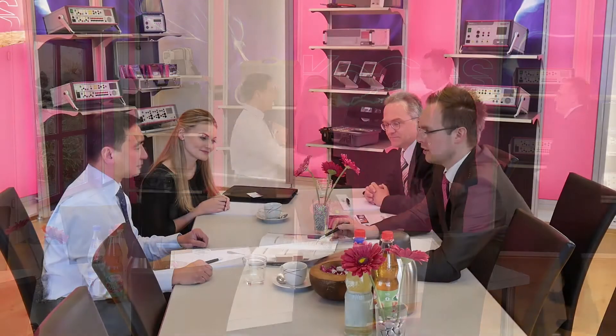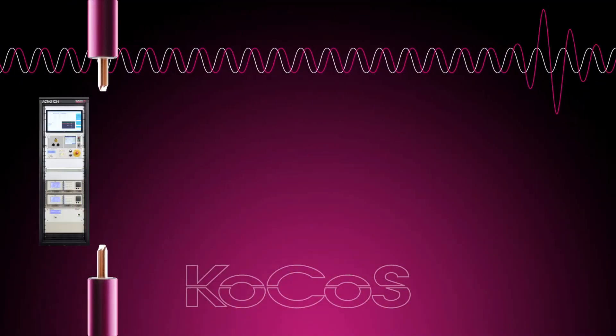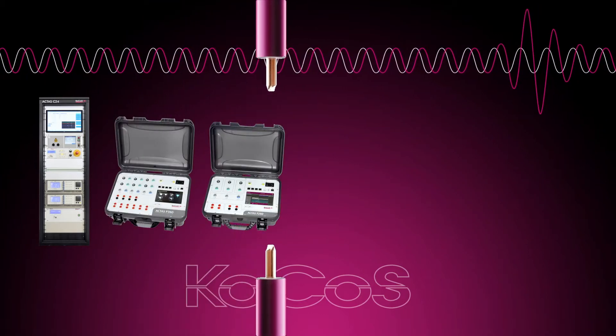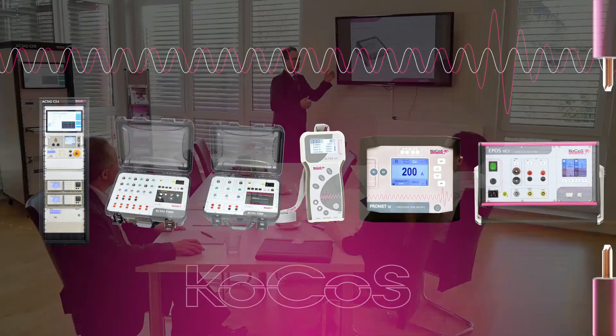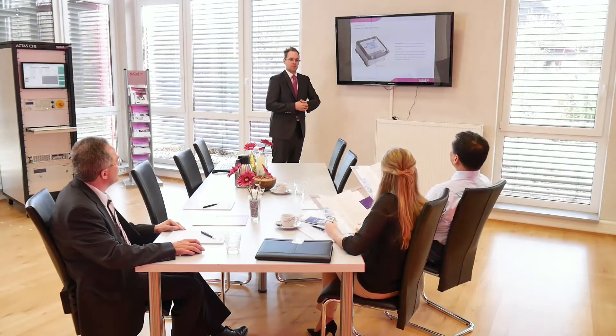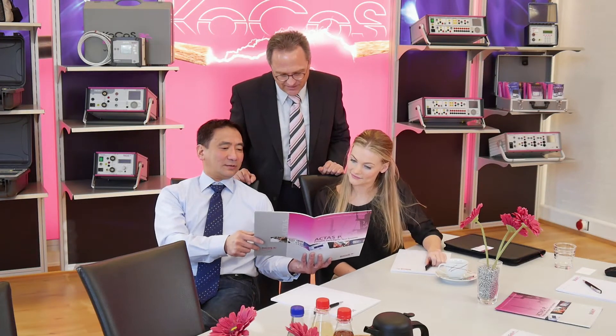Our active Switchgear test systems are divided into two product lines: stationary test systems known as Actis C systems, and portable test systems known as Actis P systems. Actis is an acronym for Advanced Circuit Breaker Test and Analyzing System.